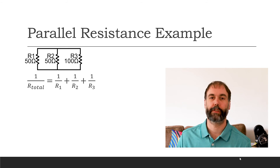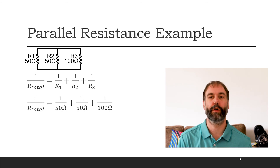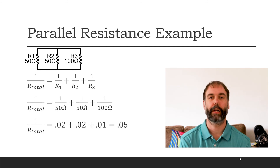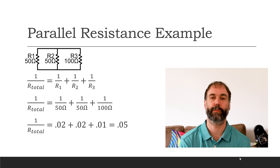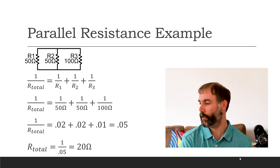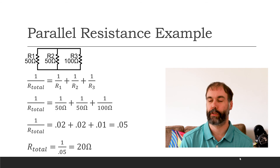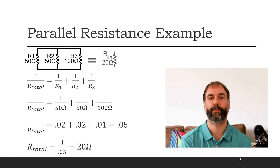So in this case, that's one over 50 ohms plus one over 50 ohms plus one over 100 ohms, which comes out to be 0.02 plus 0.02 plus 0.01. When we add these all together, that is 0.05. So our total is one over 0.05, which comes out to be 20 ohms. The equivalent resistance for this circuit is 20 ohms.